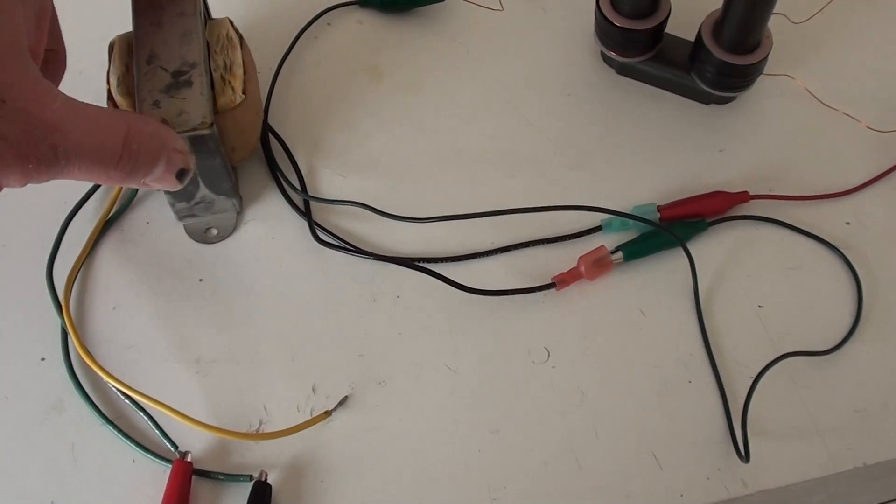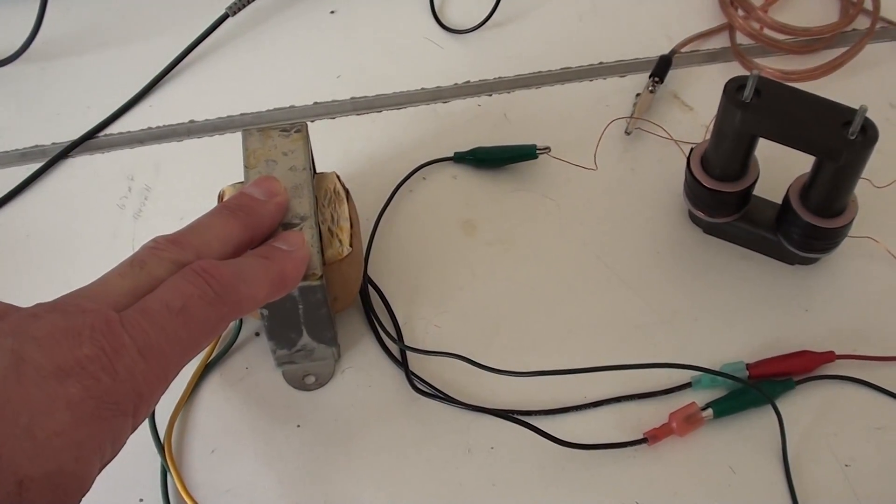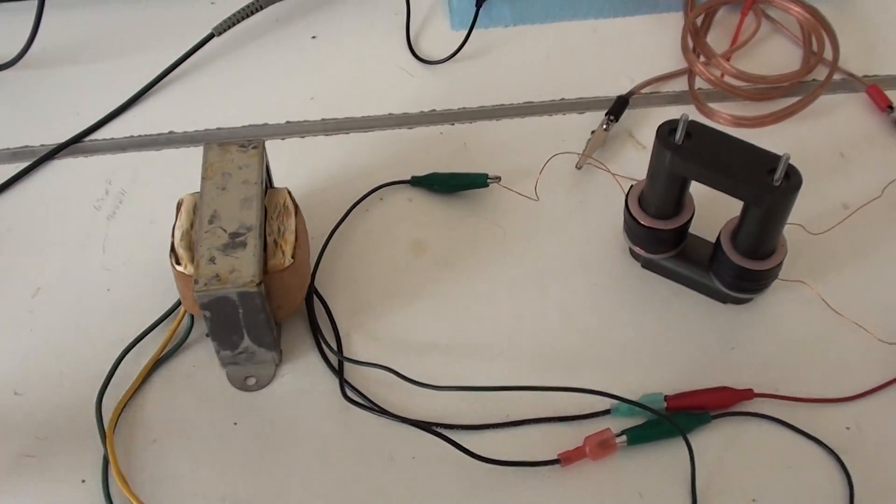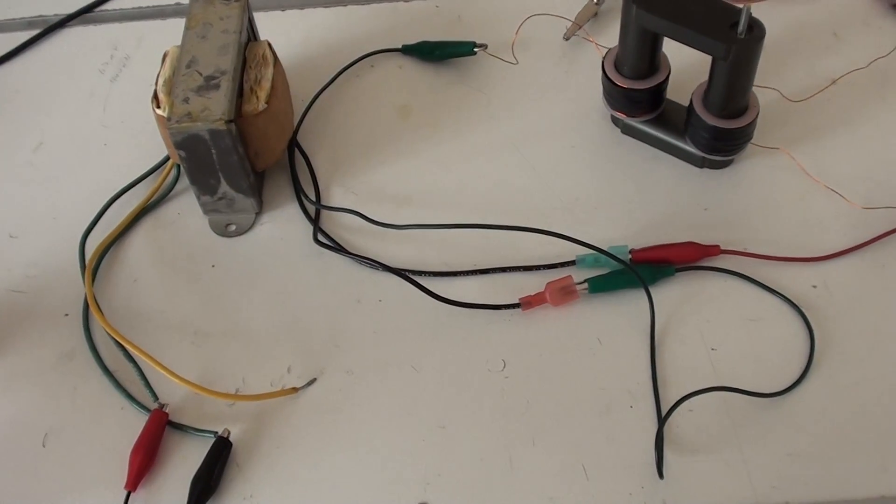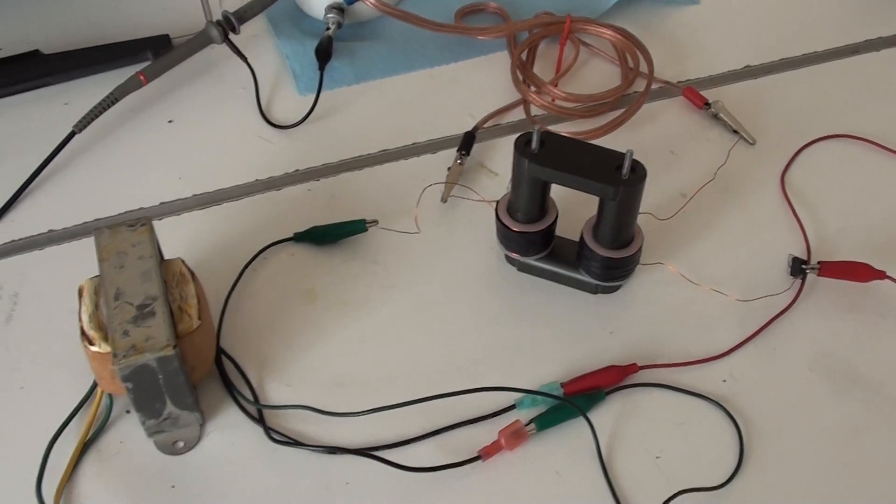So, I think my next step is to possibly maybe go to like a neon light type transformer that can give me a much greater output of voltage potential. And try that. And then, again, play around with some chokes. See if I can do something with that.